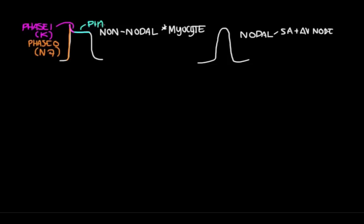In phase 2, calcium channels open while the potassium channels are still open. Calcium is entering the cell as potassium leaves the cell, and the charges sort of balance each other out, so you get this plateau period where there's no change in voltage. Eventually, these calcium channels start closing and you have a lot of open potassium channels, bringing you to phase 3, which is your repolarization phase.